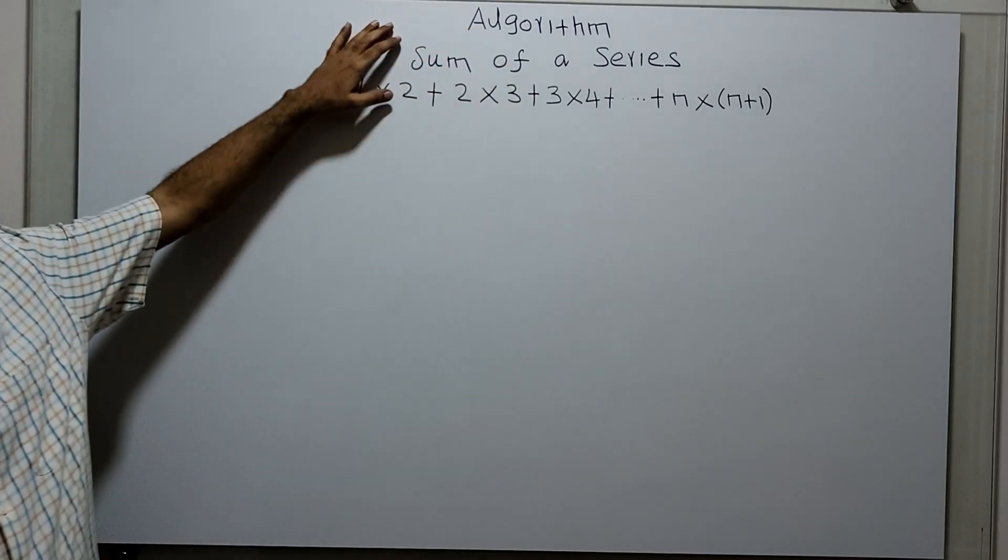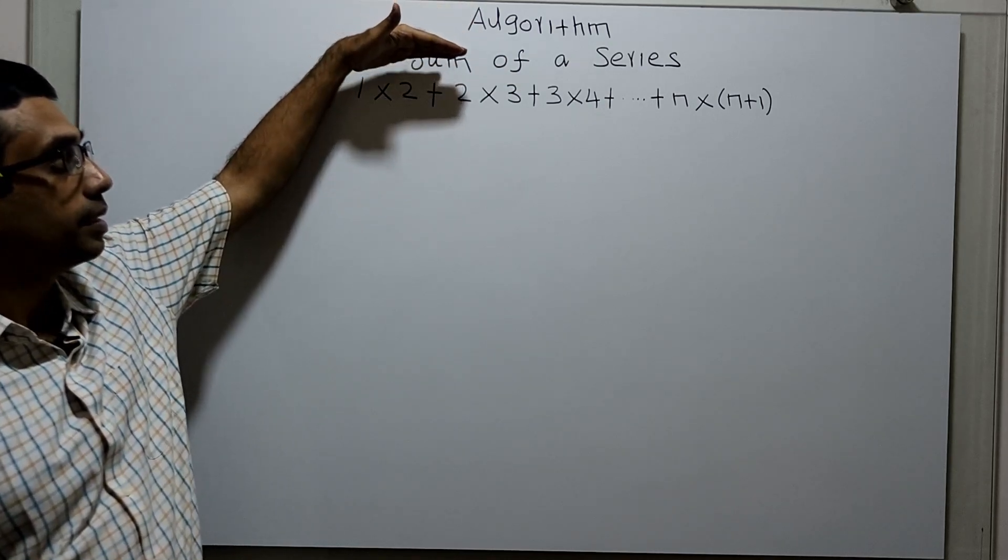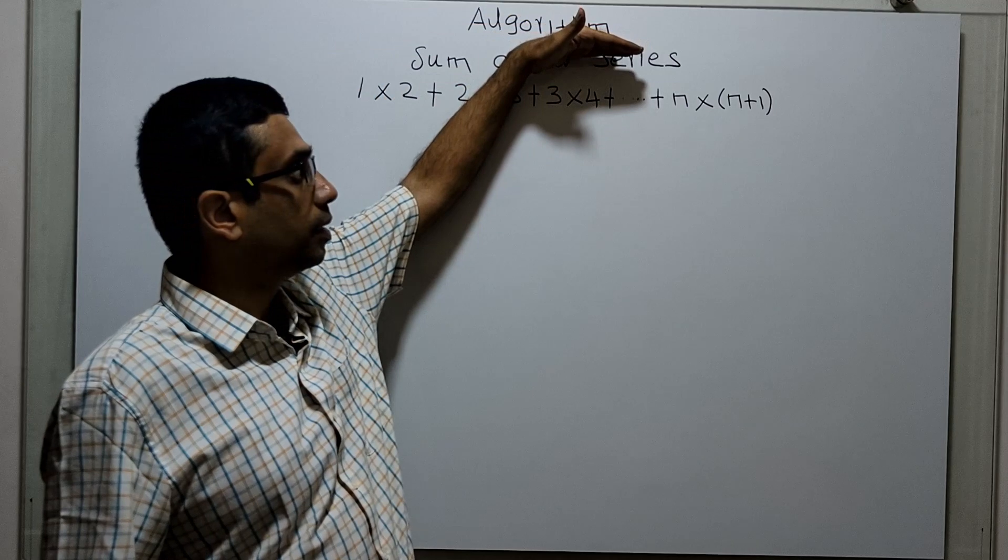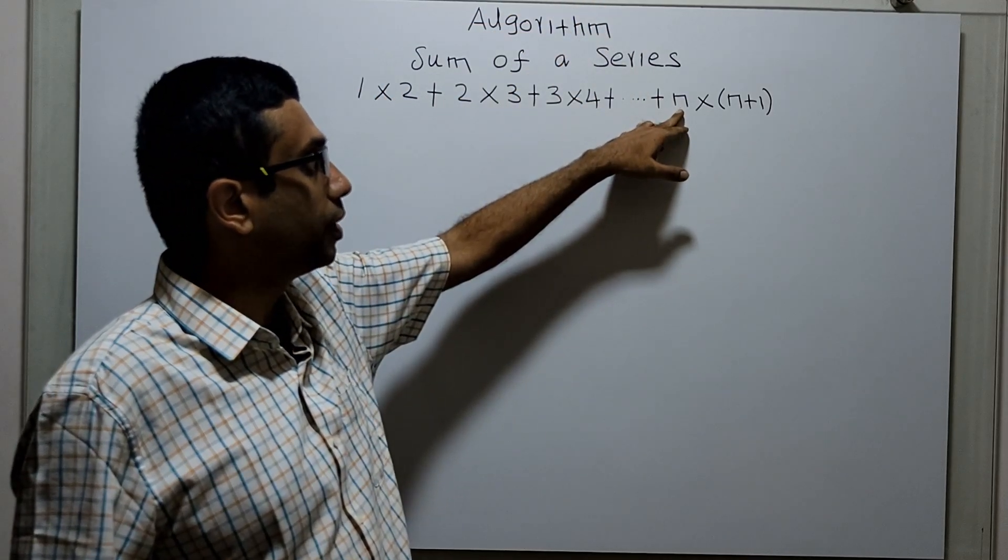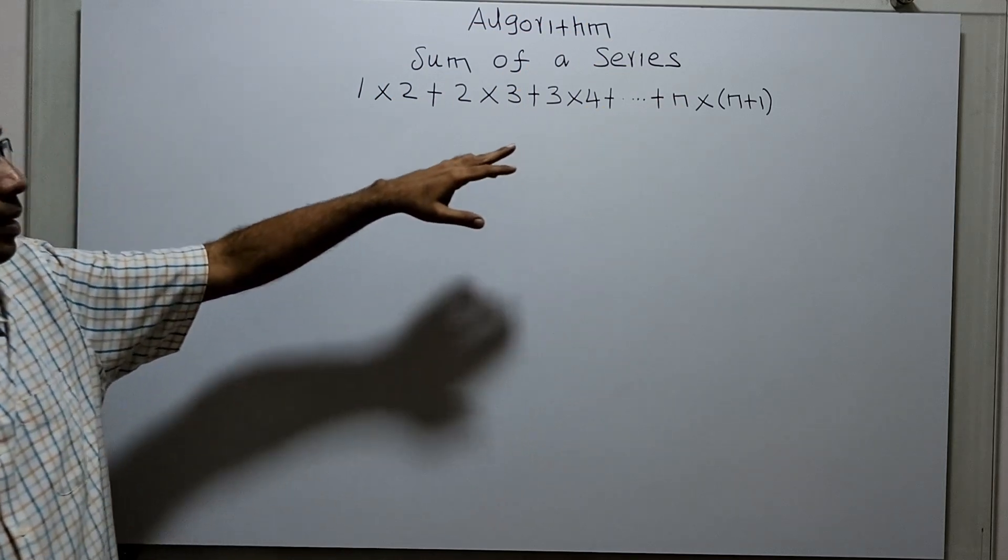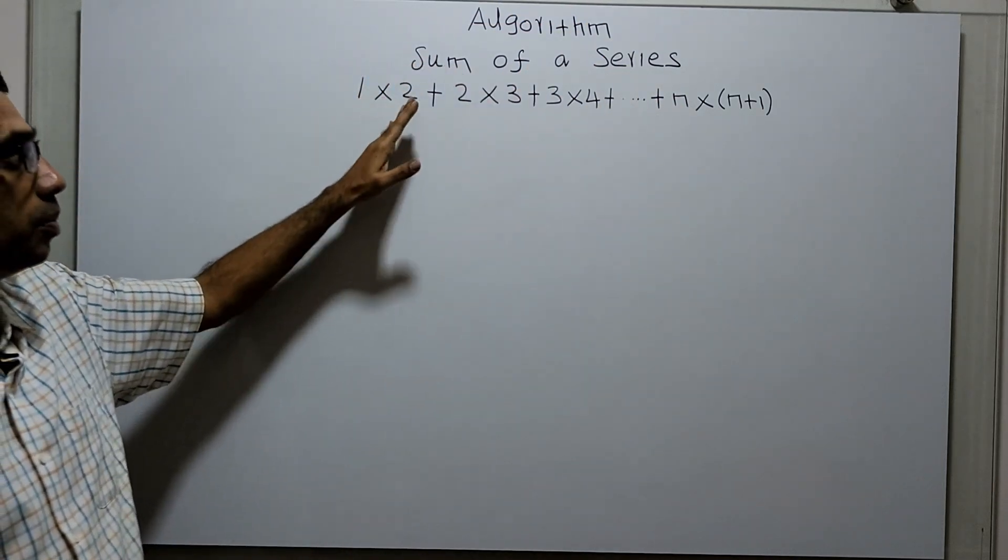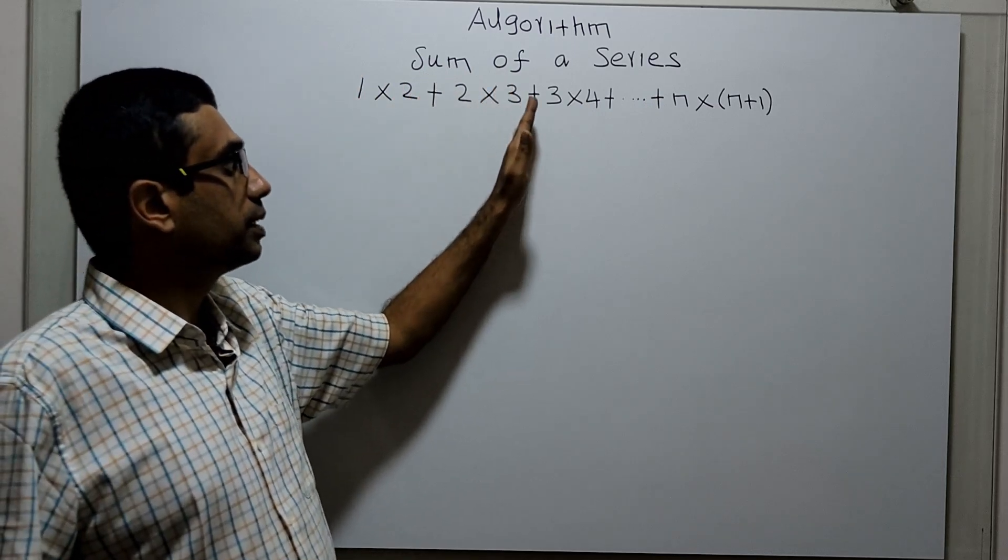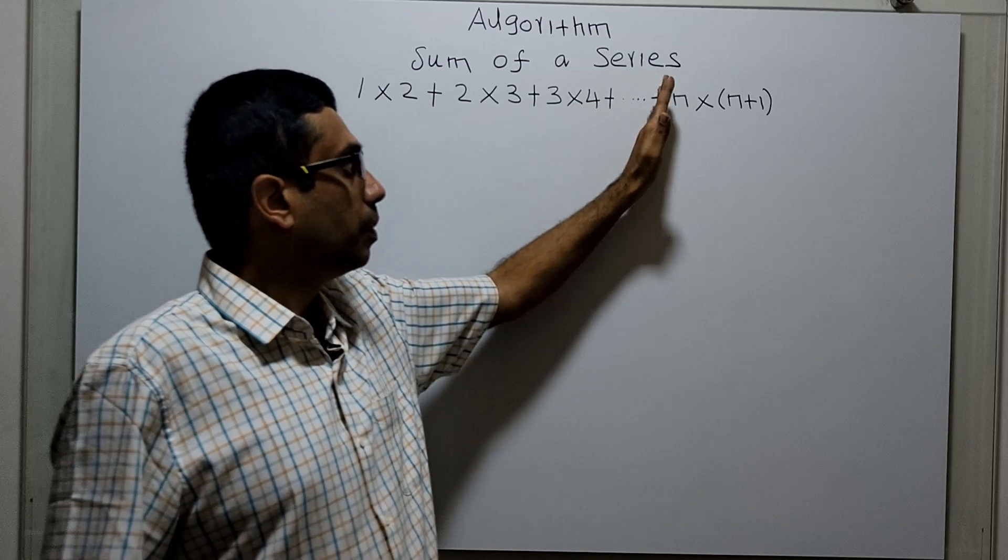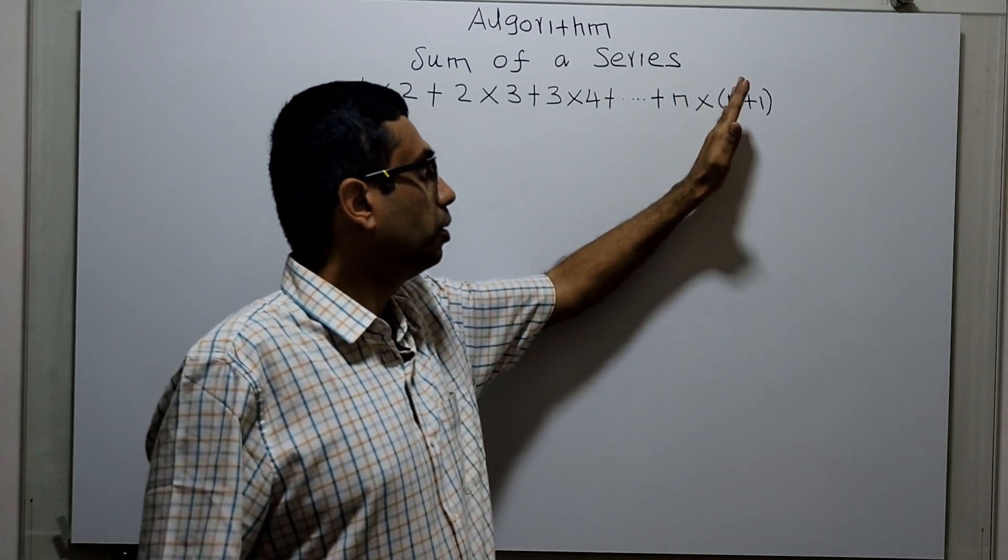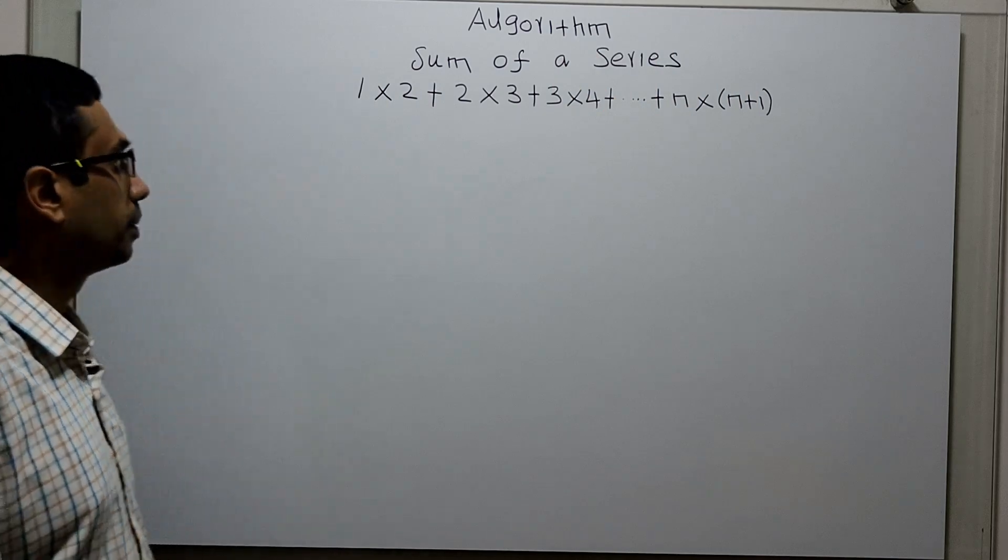Hello friends. We are going to write an algorithm to calculate the sum of a series. You have to get an input range n from the user. By obtaining the input, you have to write a series like this: 1×2 + 2×3 + 3×4 + 4×5 up to n×(n+1). For this, we are going to write an algorithm.